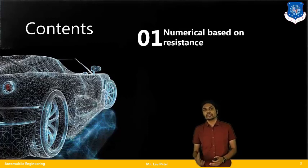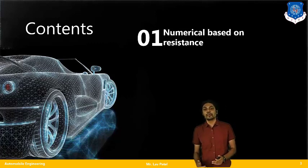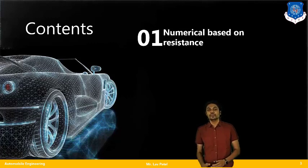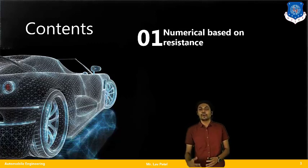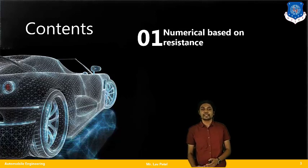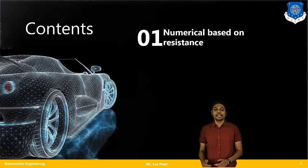Based on those resistances, we are going to solve a numerical on different types of resistance and how much effective effort is required to overcome those forces. We have completed all the theory of vehicle dynamics, and now we are focusing on numericals helpful for future calculations and better understanding of the subject. In recent years, numericals have not appeared in the GTU exam, but they may be helpful for your future or for better understanding.